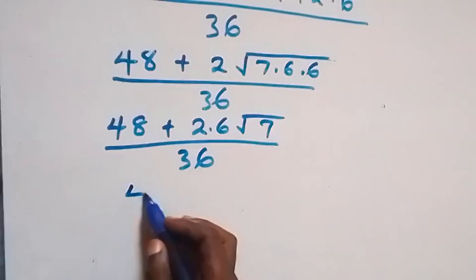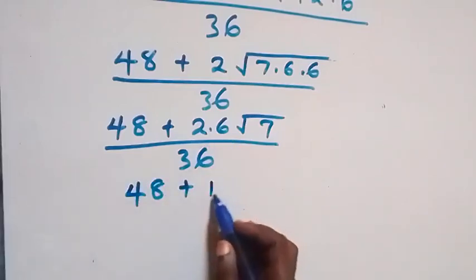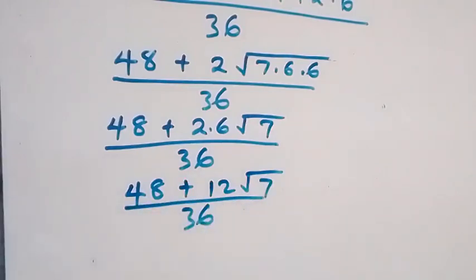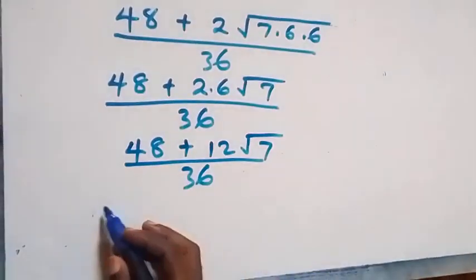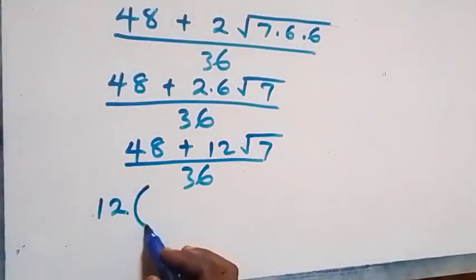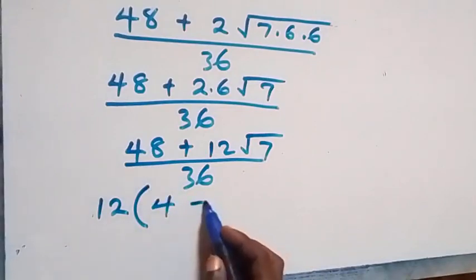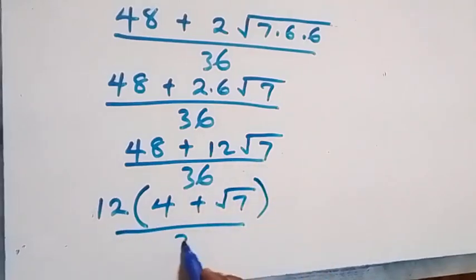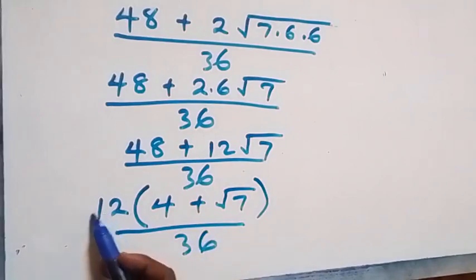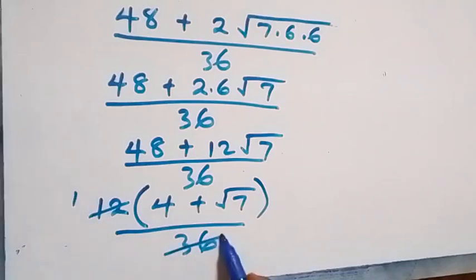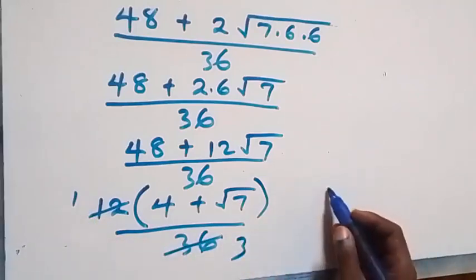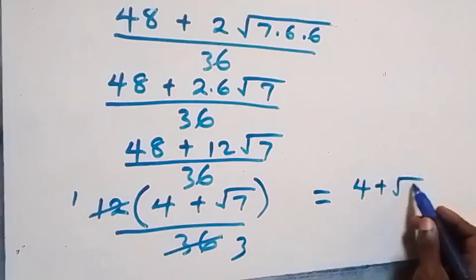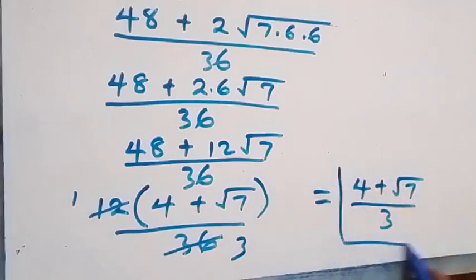We can see this as 48 plus 12 root 7 over 36. Then 12 is common, so we factor 12 out: 12 into bracket (4 plus root 7), over 36. Here 12 goes into 36 three times, so what we have equals (4 plus root 7) over 3.